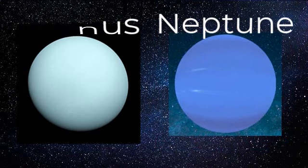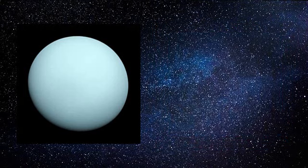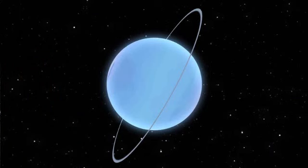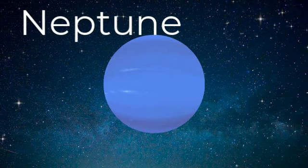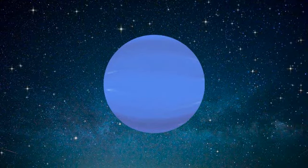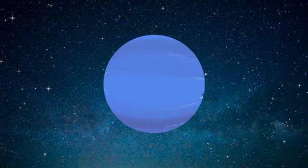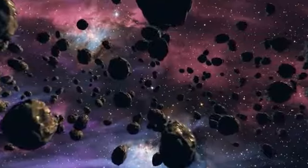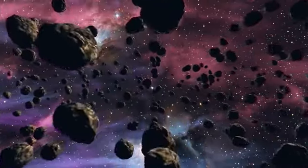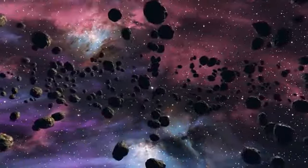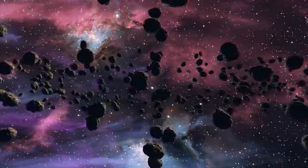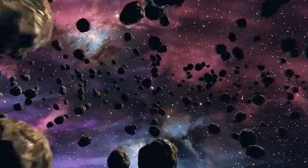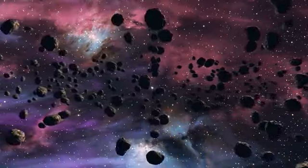Past Saturn are the ice giants Uranus and Neptune. Uranus is the slightly bigger of the two and is famous for rotating on its side. Next to Uranus is Neptune, the outermost planet in the solar system and also the coldest. Orbiting between the terrestrial and jovian planets is the asteroid belt, a flat disk of rocky objects full of remnants from solar system formation — from microscopic dust particles to the largest known object, the dwarf planet Ceres.